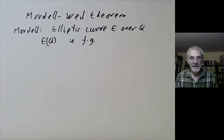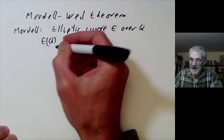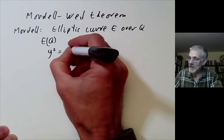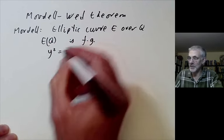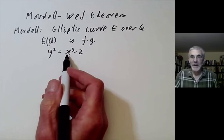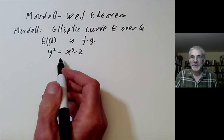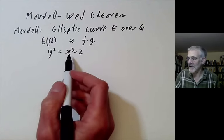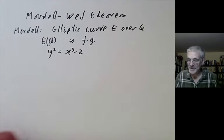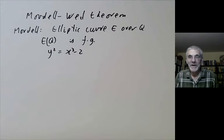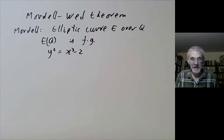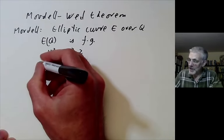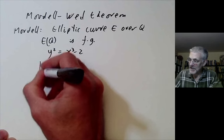I'll quickly recall what this means. An elliptic curve will look something like y squared equals x cubed minus 2. We can ask, what are the rational solutions? For example, it's got a rational solution of y equals 5 and x equals 3. The number of rational solutions may be infinite, but Mordell showed that they form a group and this group is actually finitely generated.